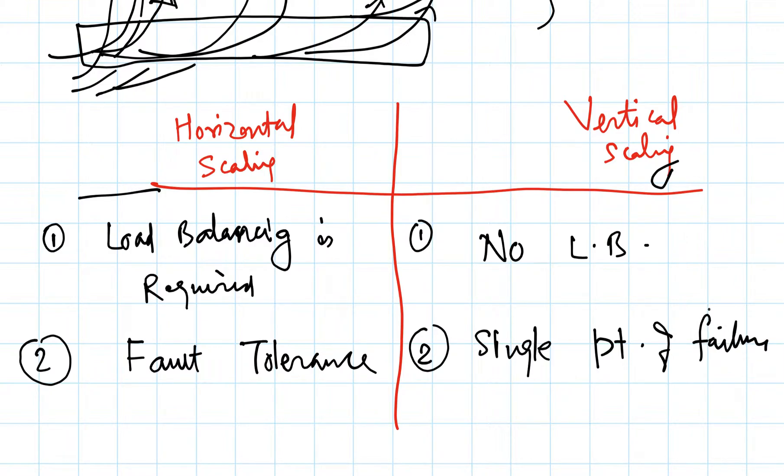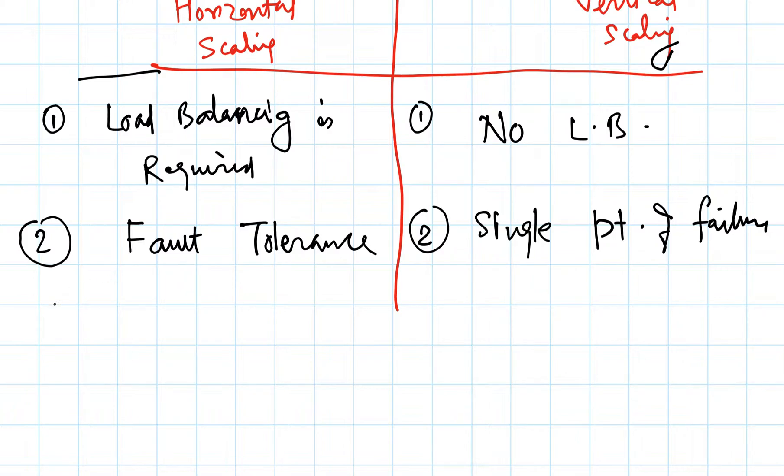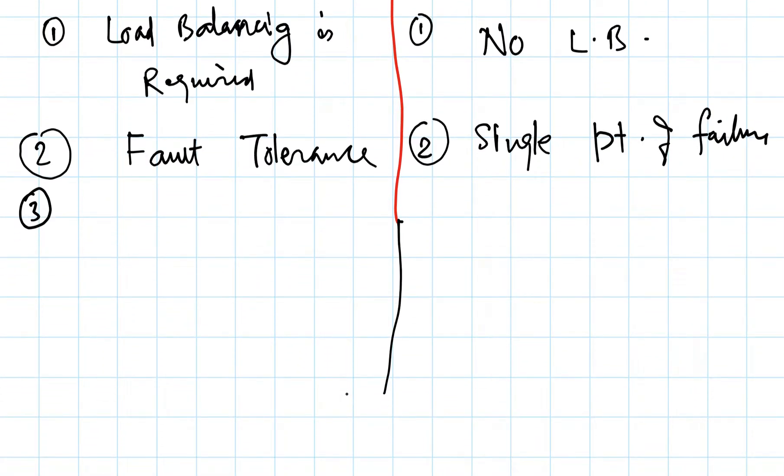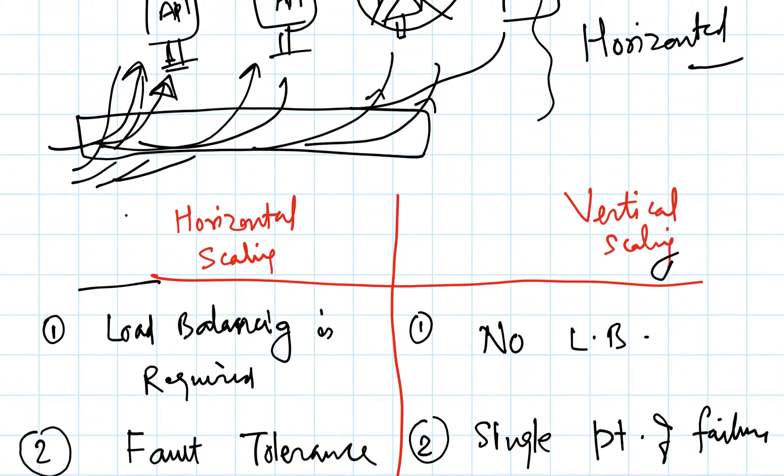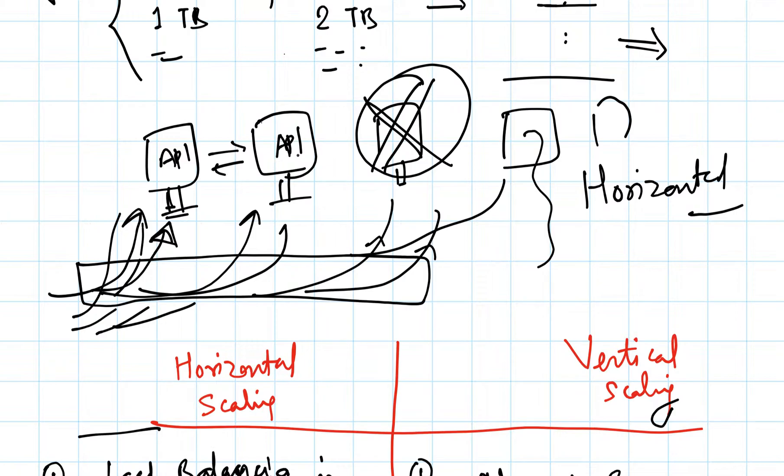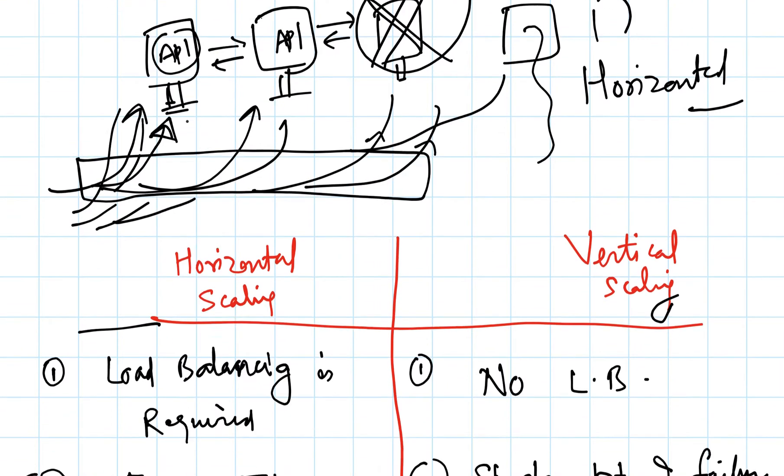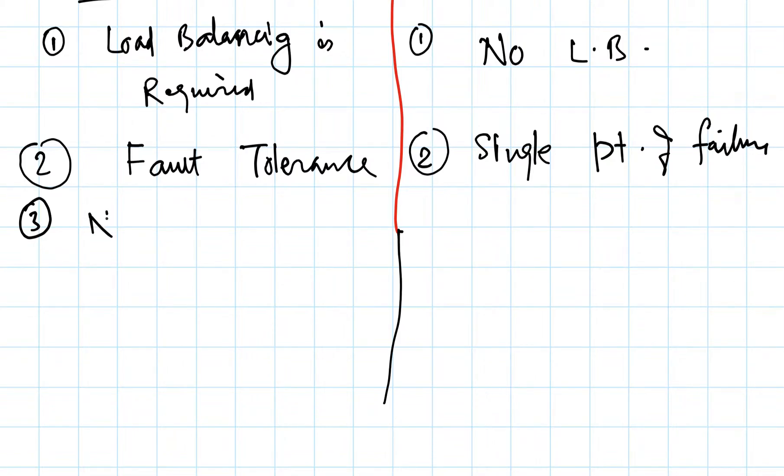Once this node goes down, everything goes down, whereas in horizontal scaling there may be slight impact on performance but the whole system will not go down simultaneously. In case of horizontal scaling we have multiple computers, so data has to be synchronized between them. For communicating between the systems, we do network calls - we call it RPC, remote procedure calls between computers. Whereas everything lies on the same computer in this case, so we can do IPC, inter-process communication, and this is faster than remote procedure calls.